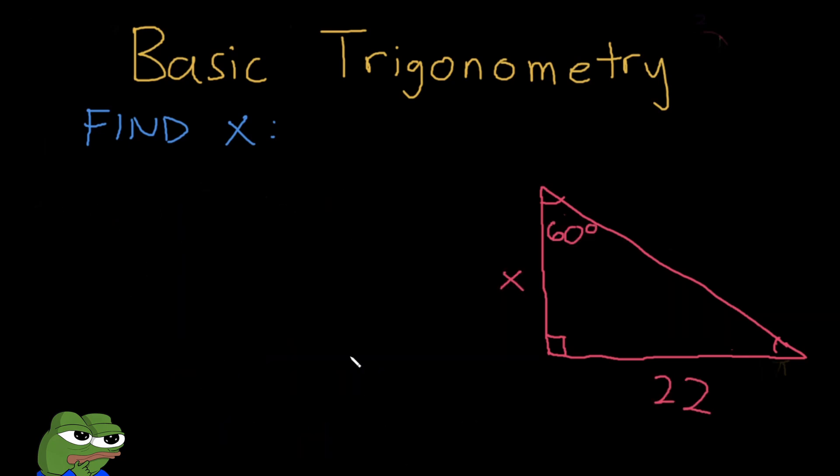Just to solidify understanding, let's try another example. Here we have an angle of 60 degrees, an opposite side which is 22, and we're trying to find the adjacent side. The hypotenuse here is not important. So if we recall our SOHCAHTOA, which trigonometric function disregards the hypotenuse? That's tangent.